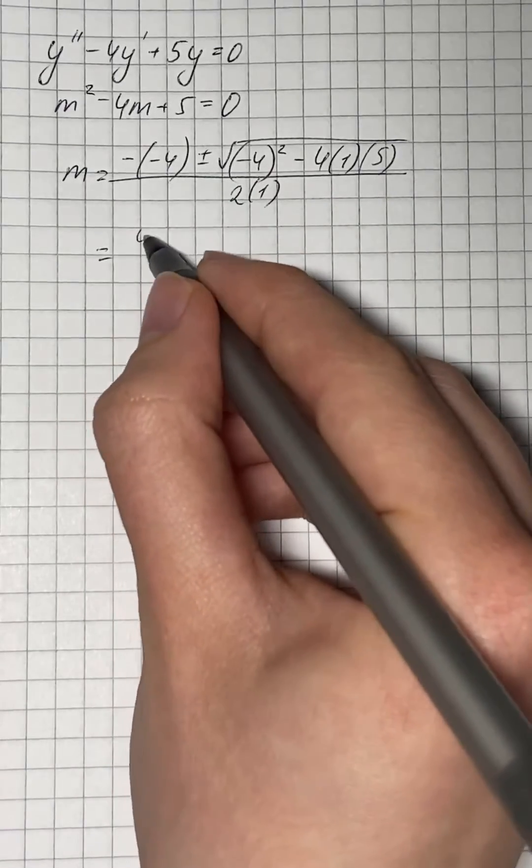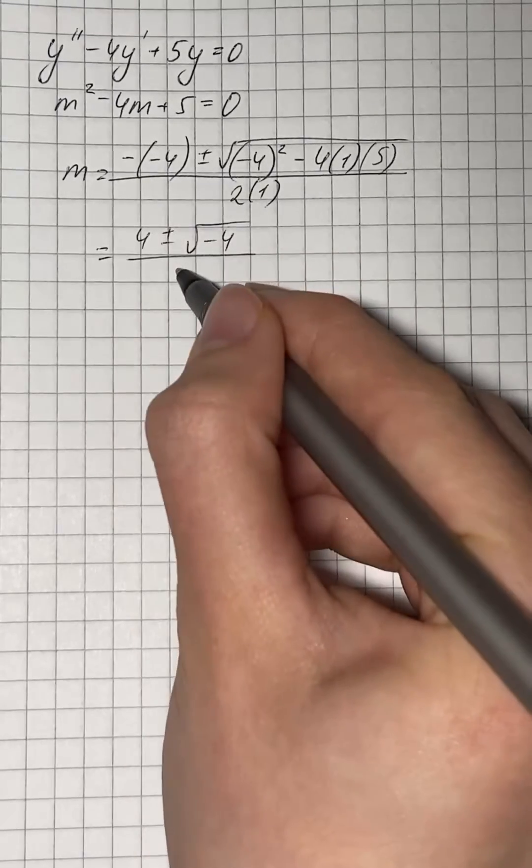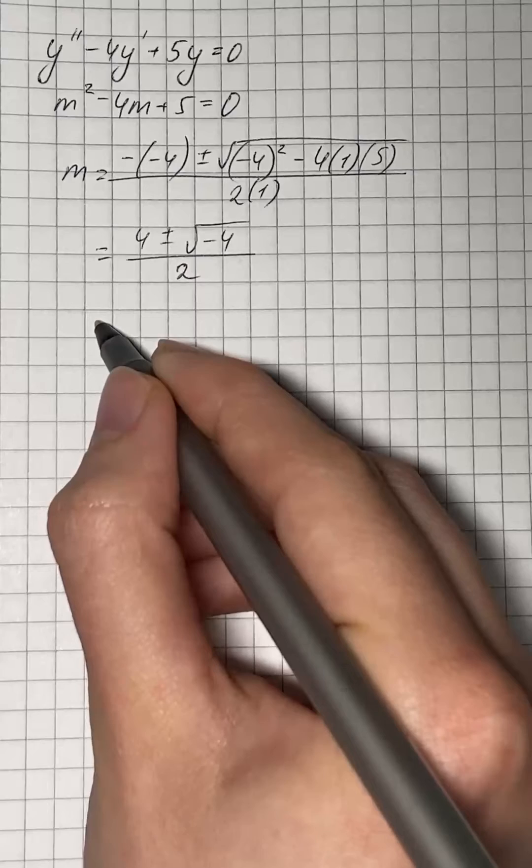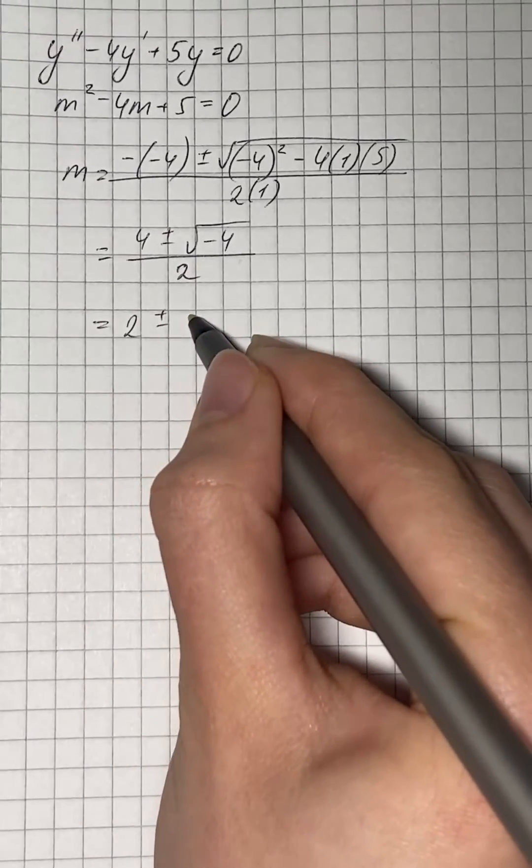That's going to be 4 plus or minus square root of negative 4, all over 2. So we get 2 plus or minus i.